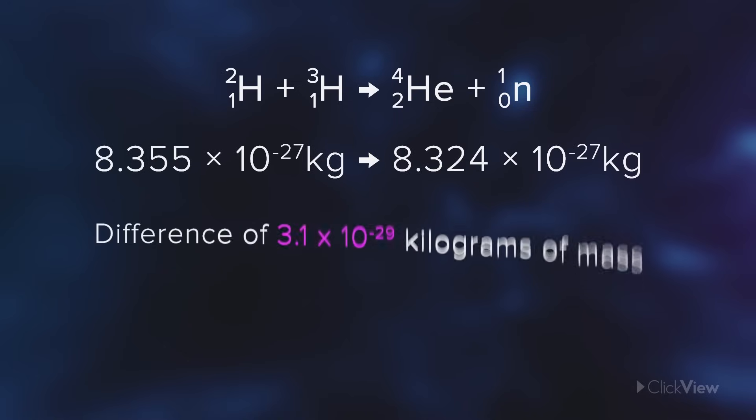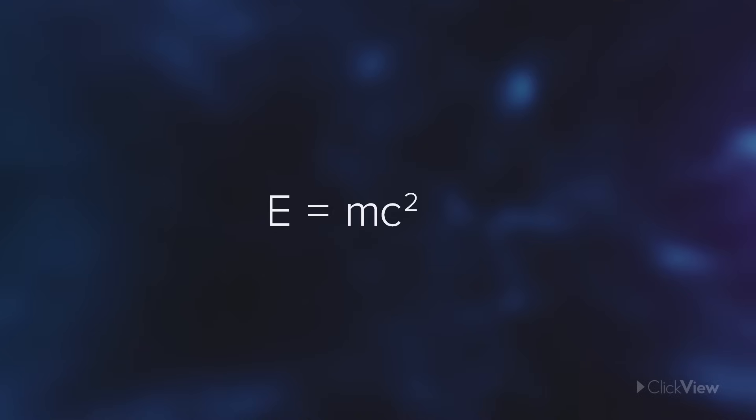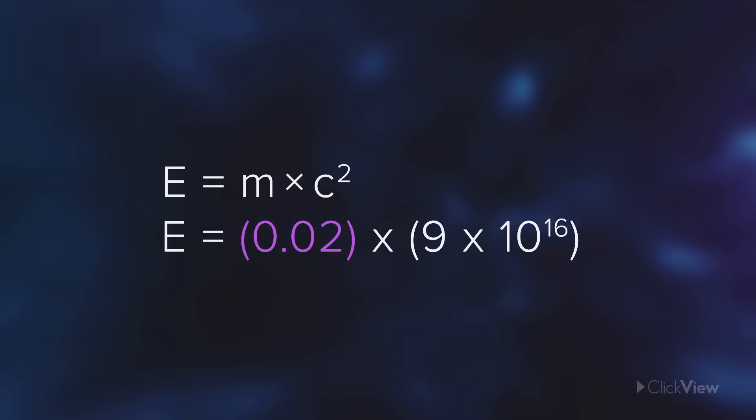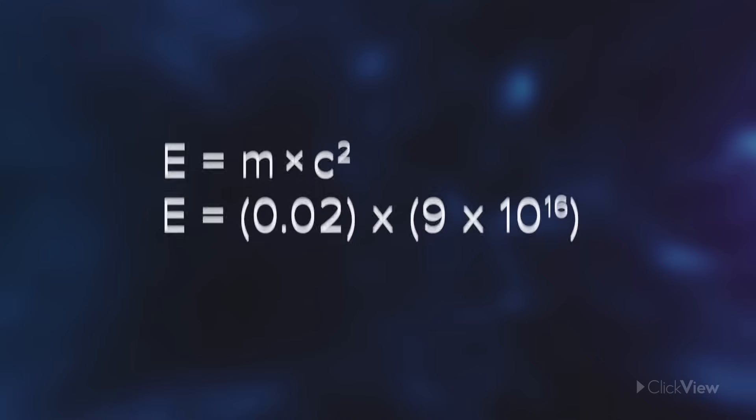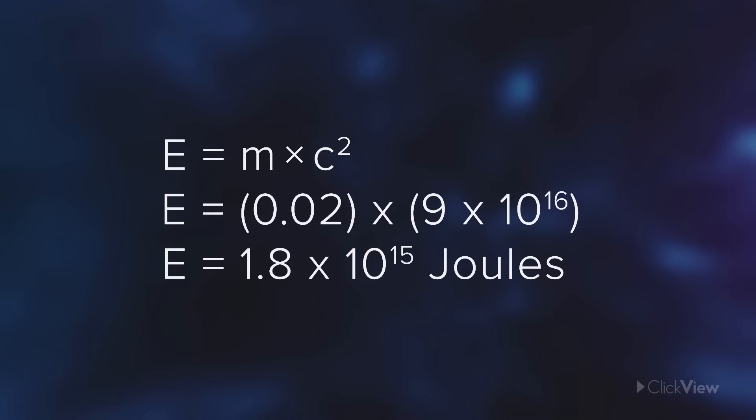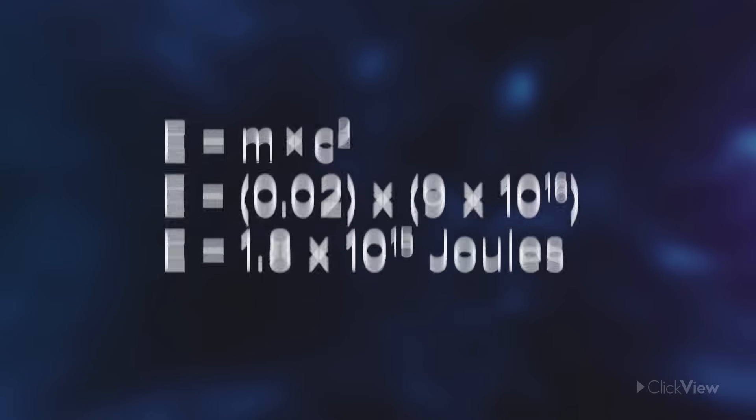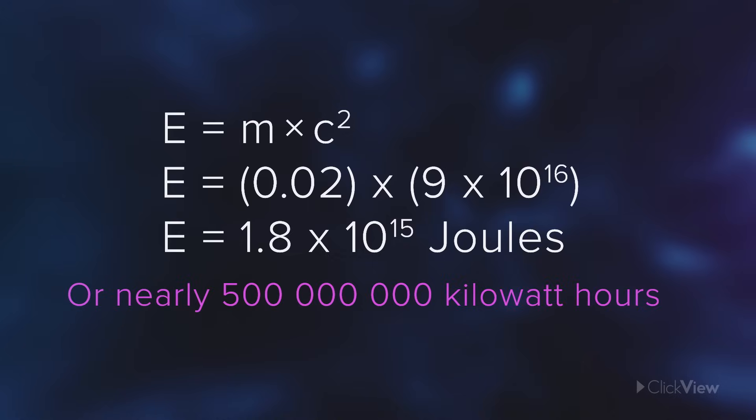A tiny 3.1 times 10 to the negative 29 kilograms of mass seems to vanish. Remember Einstein's famous equation? Energy equals mass times a super huge number, the speed of light squared. If we mixed 2 kilograms of deuterium with 3 of tritium, roughly 20 grams of mass would become other forms of energy. The difference between the reactants and the products would release 1.8 times 10 to the power of 15 joules as heat. That's enough to power about 50,000 homes for a year.